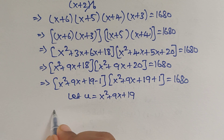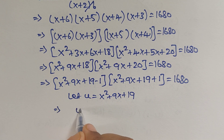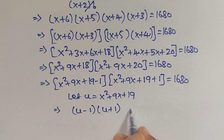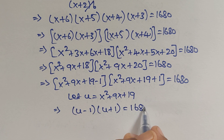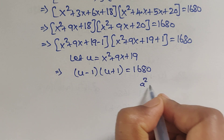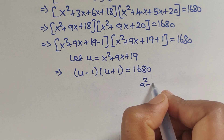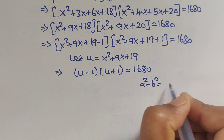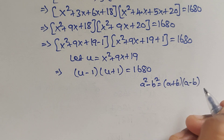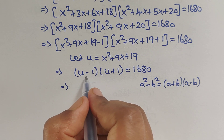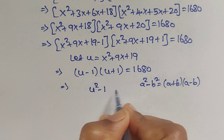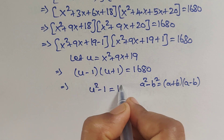We know the formula a²−b² = (a+b)(a−b). So (u−1)(u+1) can be written as u²−1 = 1680.